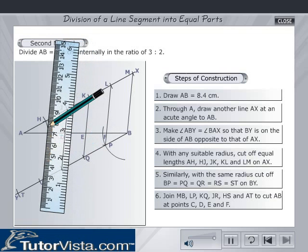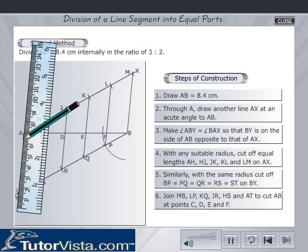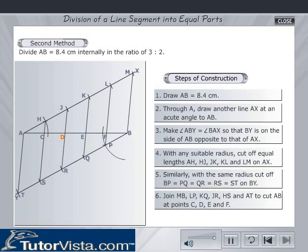Join HS and AT to cut AB at points C, D, E, and F. Thus E divides AB in the ratio of 3 to 2.